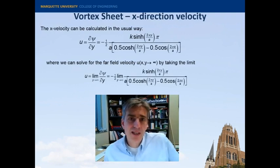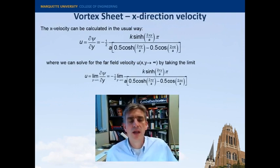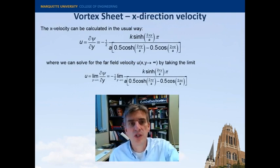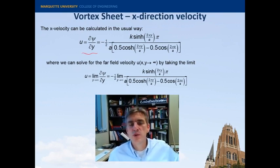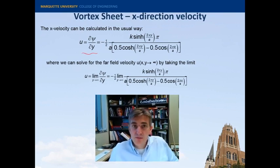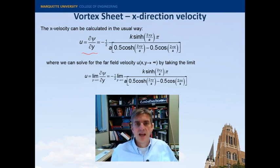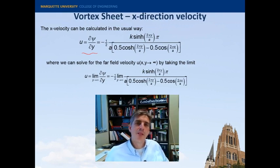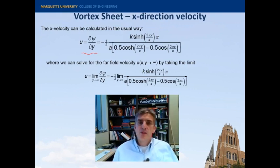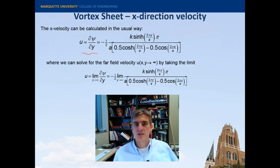All right, so we can calculate the x component of the velocity in a normal way. Since we're in Cartesian coordinates, we can just take the derivative with respect to y of the stream function psi. And this is easy enough to do. You can do this in Maple, if you would like. And so we end up with this hyperbolic sine over hyperbolic cosine minus cosine.